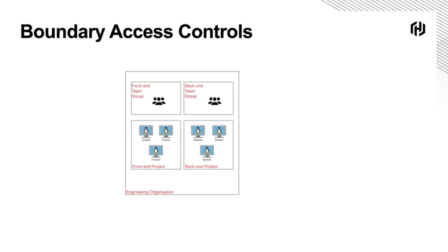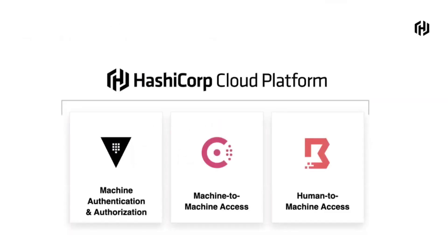Everything we've talked about is available as part of HashiCorp Cloud Platform — be it Vault, Console, or Boundary — as managed versions. If you prefer to roll your own solutions, we have open source versions where you can download the binary and run it yourself. It's community supported, with a wealth of information to help you employ best practices. The lowest barrier is using HashiCorp Cloud Platform, and that's how I've set up the demo I'm going to show you today.